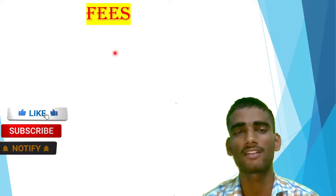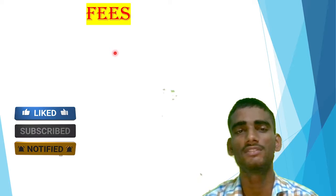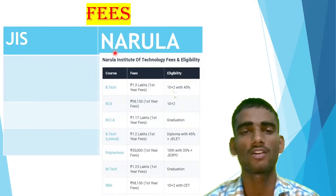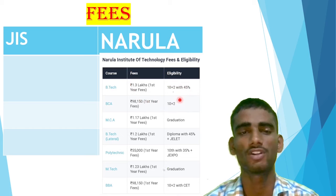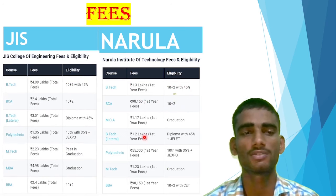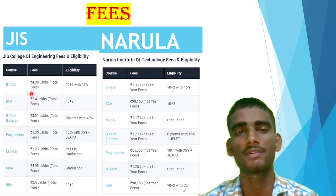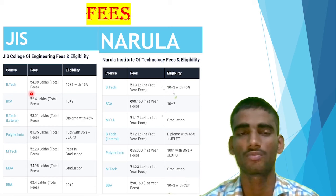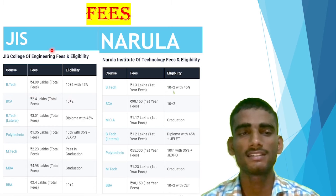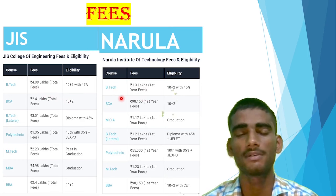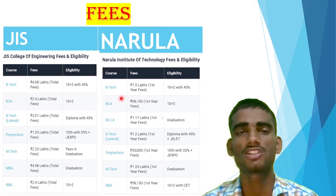Now talking about the fee structure of both colleges, because fees matter for many students. For Narula Institute of Technology, for the first year you have to pay 1.3 lakhs, and eligibility requires 10+2 with 45 percent. For JIS, the total four-year fee is around 4.08 lakhs, so in terms of fee, JIS is lower. Narula charges more, likely because their placement record is higher. Note that these are last year's figures — I will update the exact fee in the description when it is officially updated.